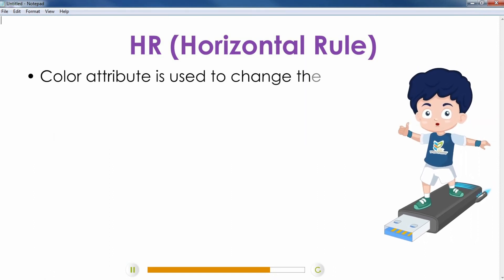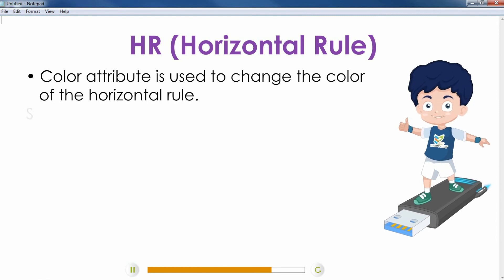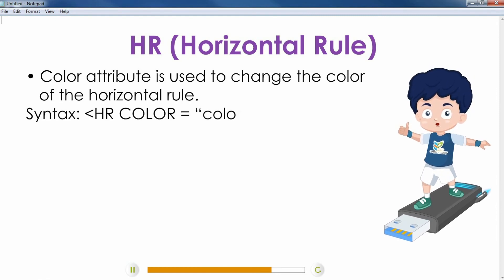Color attribute is used to change the color of the horizontal rule. Syntax: Hr color equals color name or code.